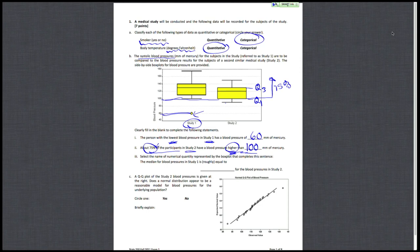And then finally, which numerical quantity represented by the box plot completes our sentence here about the median? The median for blood pressures in study 1 is roughly equal to what quantity for the blood pressures in study 2? Alright, that median looks like it's about Q3 for study 2. And then the box plot we see in study 2 looks to be somewhat symmetric.